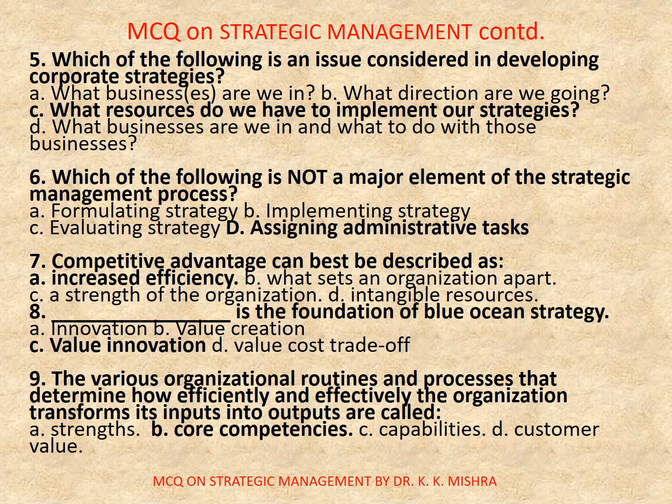Question number 9. The various organizational routines and processes that determine how efficiently and effectively the organization transforms its inputs into outputs are called: A. Strengths, B. Core competencies, C. Capabilities, D. Customer value. Correct option is B. Core competencies.